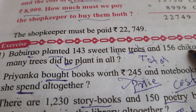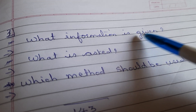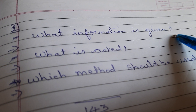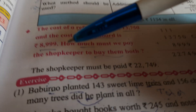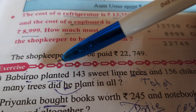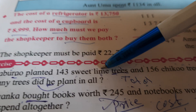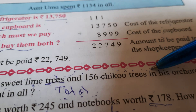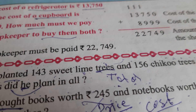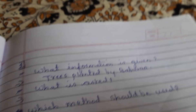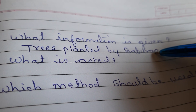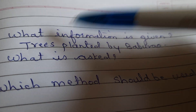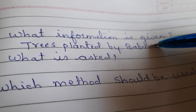So here what information is given? Babu Rao planted 143 sweet lime trees and 156 chiku trees. We have to write that in short: trees planted by Babu Rao — so we write 'trees planted by Babu Rao.'